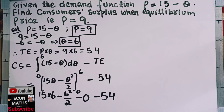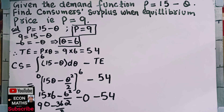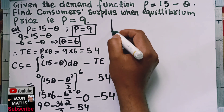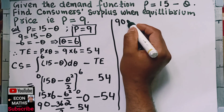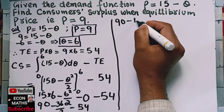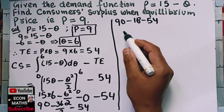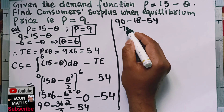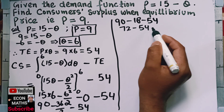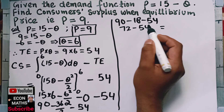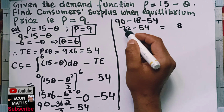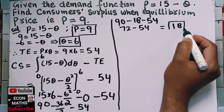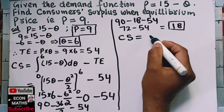Now, this will become 15 into 6 — 5 sixes are 30, and 1 six is 6, so this is 90 — minus 6 squared, which is 36 divided by 2, that is 18, minus 54. Now solving this: 90 minus 18 is 72, and 72 minus 54 equals 18. So the consumer surplus is equal to 18.